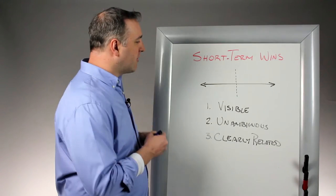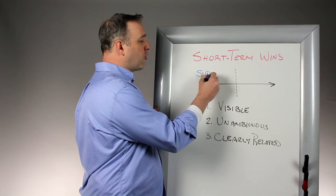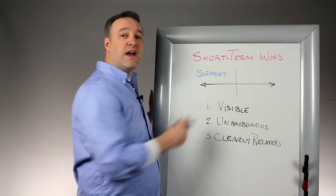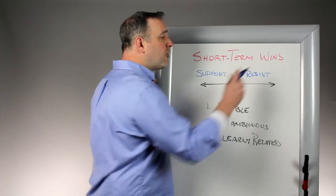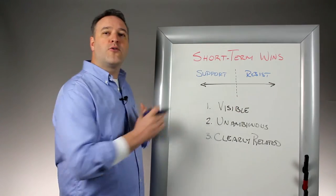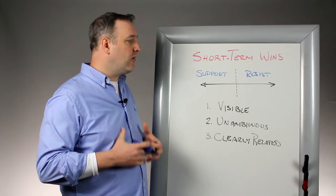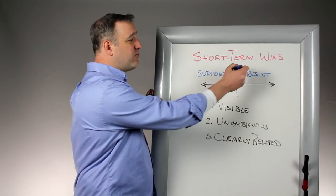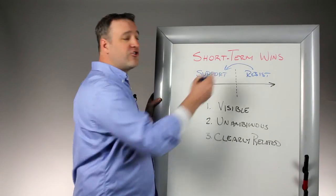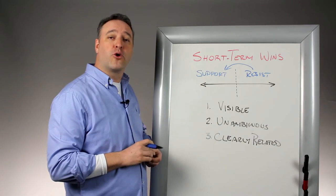If you think about it in your organization, you're going to find people who really support you, and then you're going to find some people that resist what you're trying to accomplish. The purpose of short-term wins is to reward those people who've been working hard alongside you and get them to feel a sense of accomplishment. It also aims to move these resistors onto your side and get them to start to support your process.